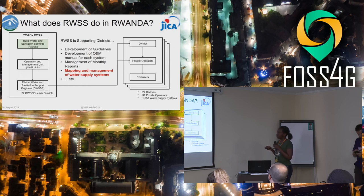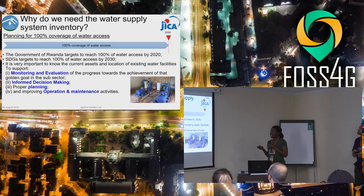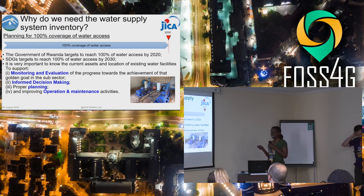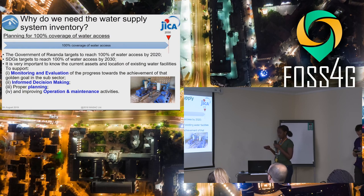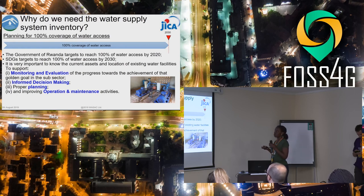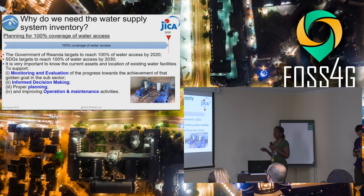What WASAC does through its rural department is develop guidelines and operation and maintenance manuals for each system for sustainability. We manage monthly reports to see if operators are working efficiently and providing good services. We were working on mapping and management of water supply systems. We targeted 100% water access by 2020, and as SDGs target 100% by 2030, we couldn't achieve this without knowing the current assets we had — that's when data collection came in, for better monitoring and evaluation, proper decision-making, improving services, expanding networks, planning new projects, and improving operation and maintenance.